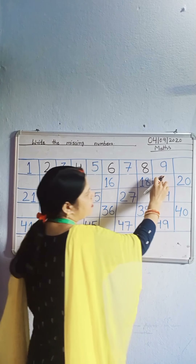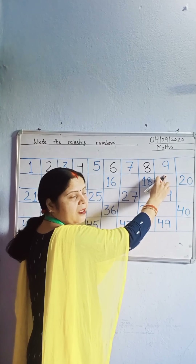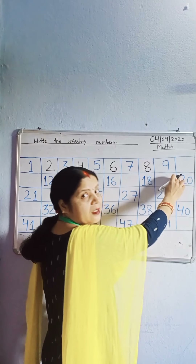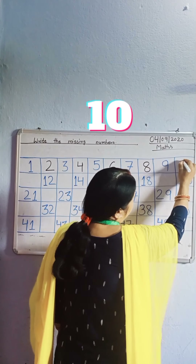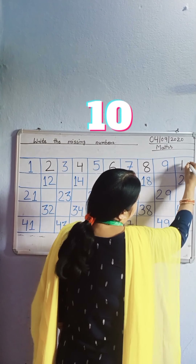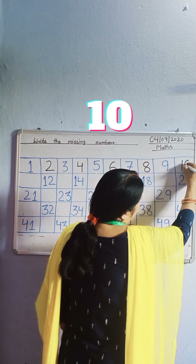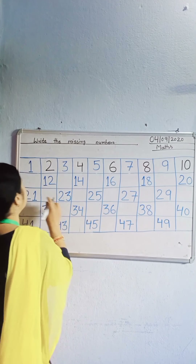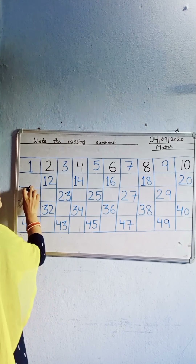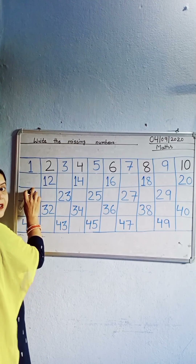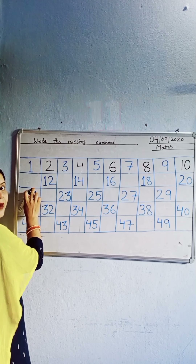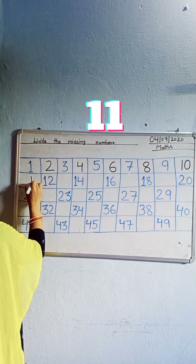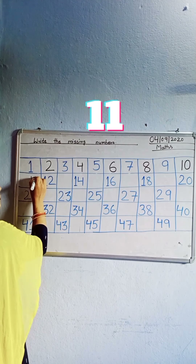Next, which number? 9. Which number is missing? 10. Write down 10. Which number is missing? 11. Write down 11.